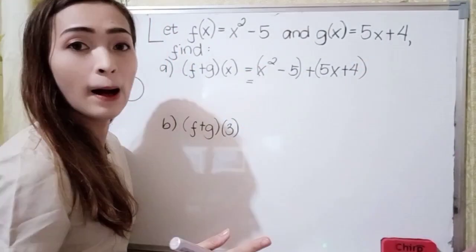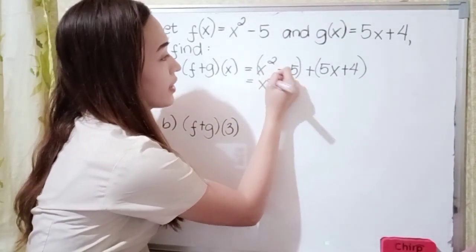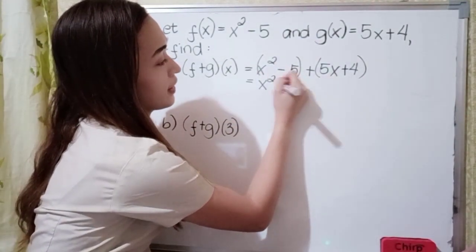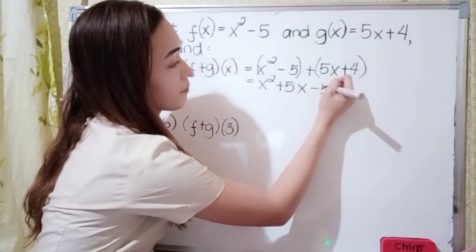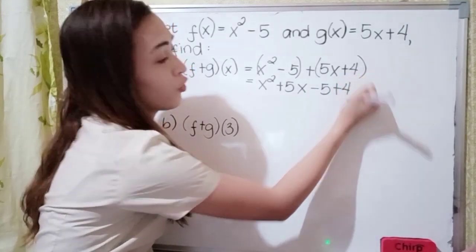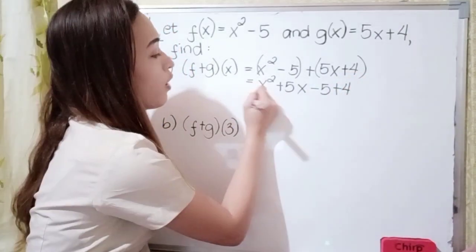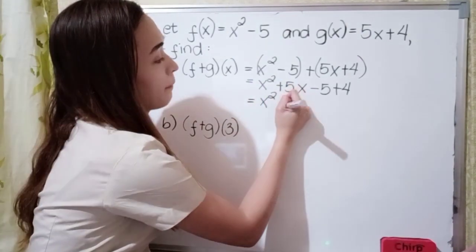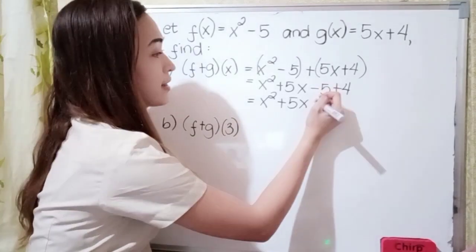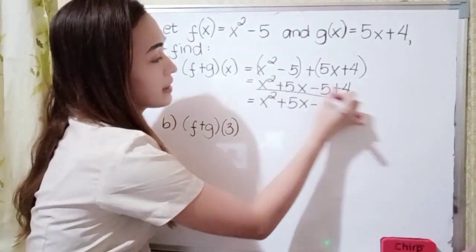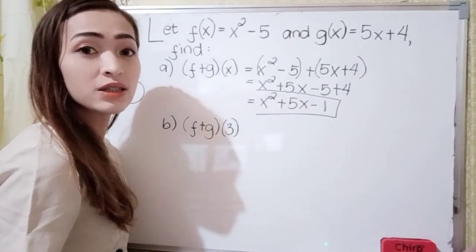Now let's combine the similar terms. We have x squared, then positive 5x, and then negative 5 plus 4 because they are constants. So x squared plus 5x, and negative 5 plus 4 is negative 1. So our answer is x squared plus 5x minus 1.